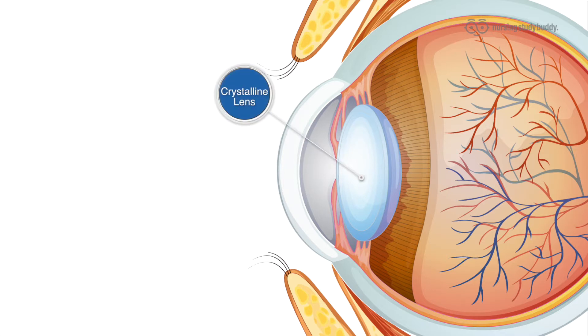The crystalline lens sits behind it, and it gets a lot less light because of our shutter. It further focuses the light through a process called accommodation. This is like an autofocus on near or far objects to bring greater clarity and detail to them.